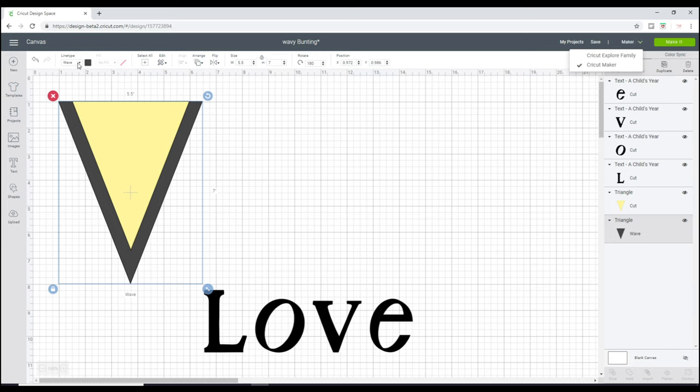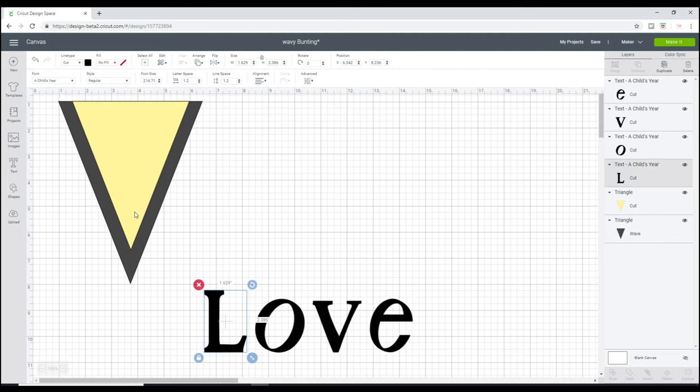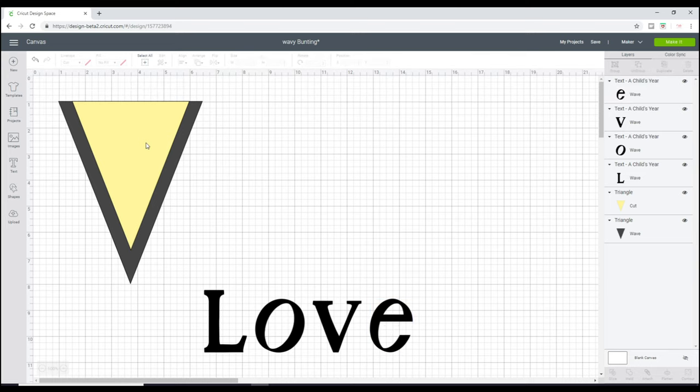You want to of course make sure that you are set to your Maker up here, and you'll then be able to get the different line types. The same with the text, I want to change the line type to wave. Again, it's going to look exactly the same, but you'll see below it says wave.